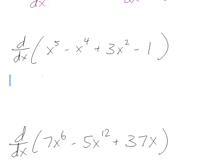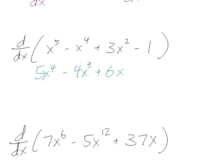The derivative of x to the fifth is 5x to the fourth minus 4x cubed plus we have 2 times 3 which is 6x and the derivative of a constant is 0. So the answer is just 5x to the fourth minus 4x cubed plus 6x.